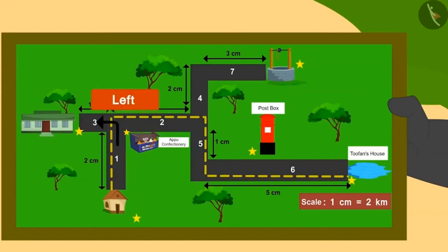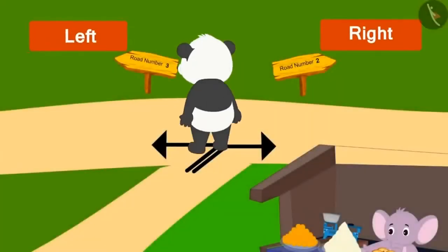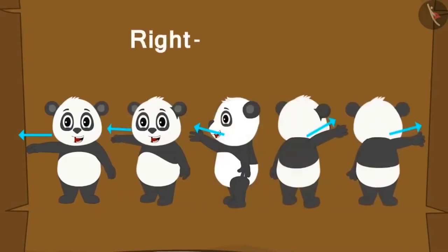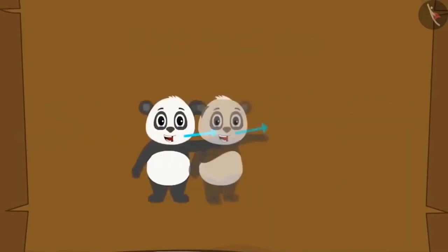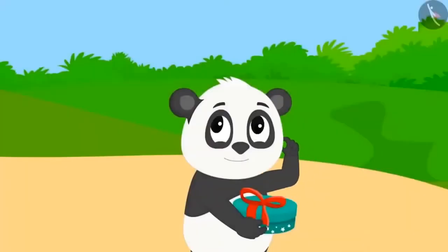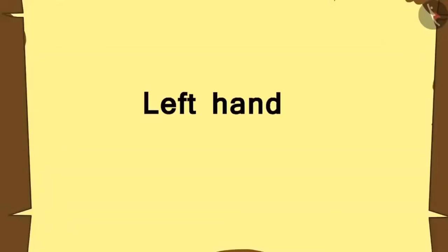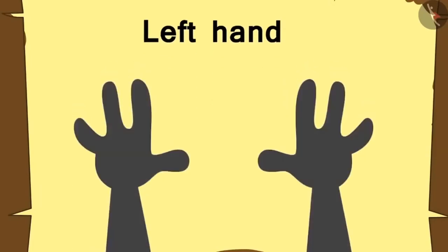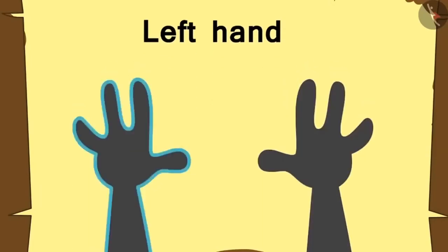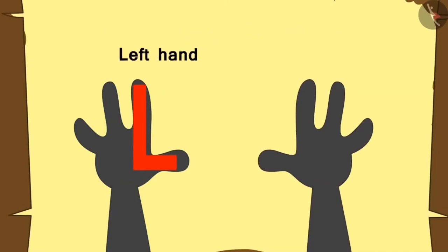Kids, do you know how to identify right and left directions? The direction that comes to your right hand side is called right, and the direction towards your left hand is called left. Here is an easy way to identify them: the left hand starts with the letter L. Keep your hands like this — the hand whose thumb and index finger make the letter L is your left hand, and the other one is right.